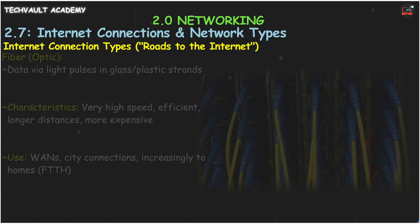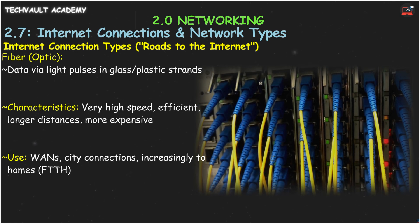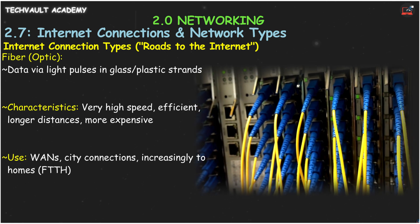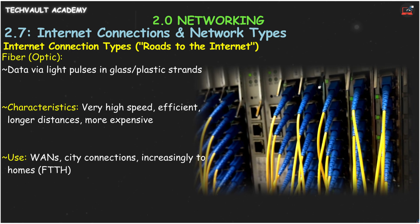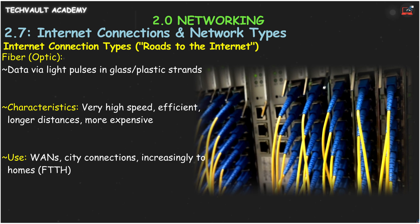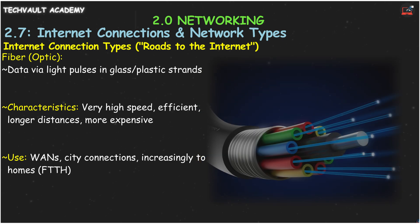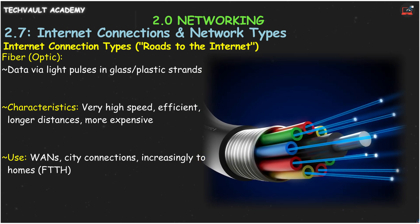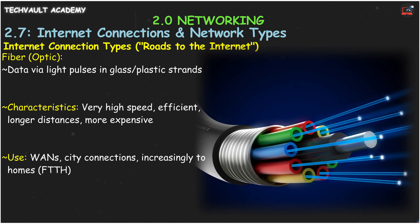Next, fiber optic. This uses light through thin glass strands — super fast and efficient, like a laser beam for your data. It's more expensive, but can carry huge amounts of data over very long distances. Once only for big networks, fiber now often comes right to your home.